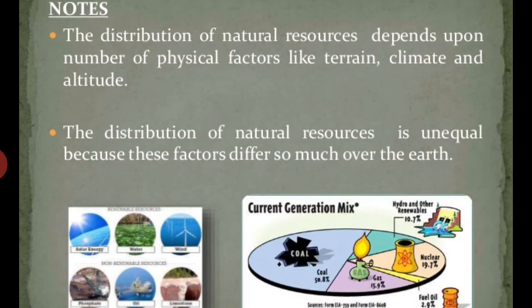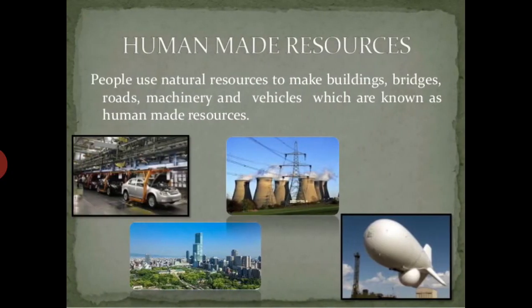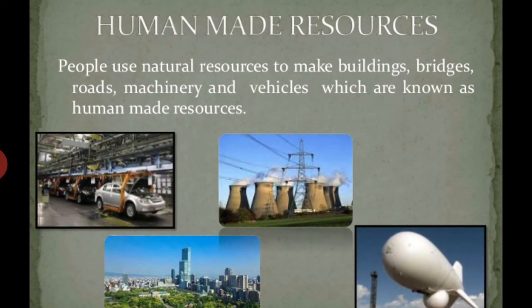The distribution of natural resources is unequal because these physical factors differ so much across the Earth. Different regions have different factors, which is why different types of resources are found in different places. For example, minerals are mostly found in plateau regions. Countries that have more resources, utilize them, and have technical development are counted as developed countries.